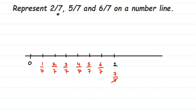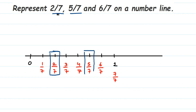Now let's plot the given numbers. First is 2/7, which is here — I'm going to mark this one. Next we have 5/7, which is here. And next we have 6/7, which is right next to it. That's it!